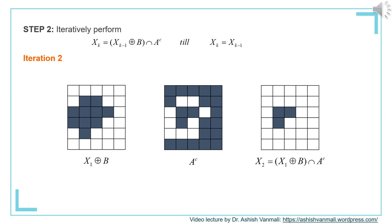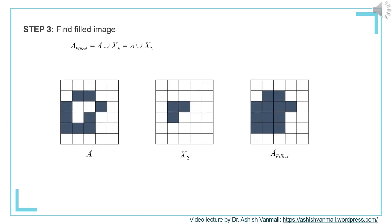X_2 is the same as X_1, hence our algorithm terminates. The final step is to find the filled image, which is A union X_K — in this case A union X_2. You can see image A in the first figure, X_2 in the second figure, and their union, that is the filled image, is shown in the third figure.